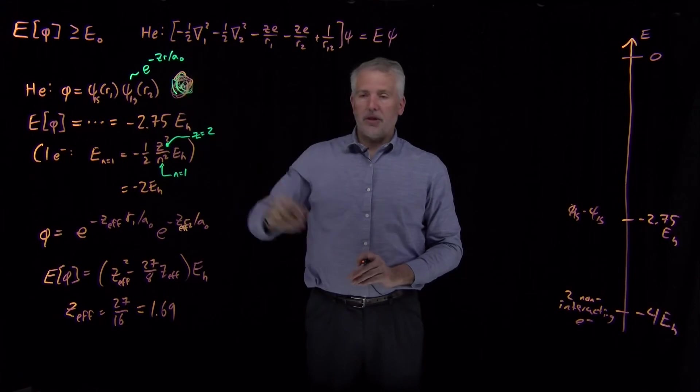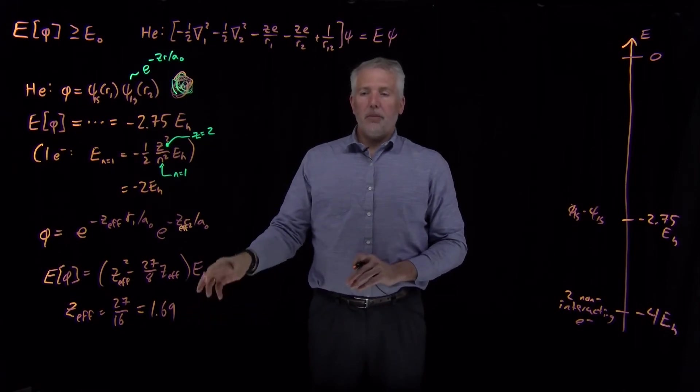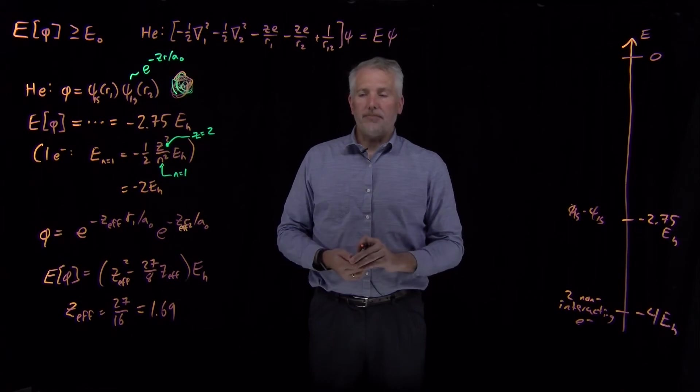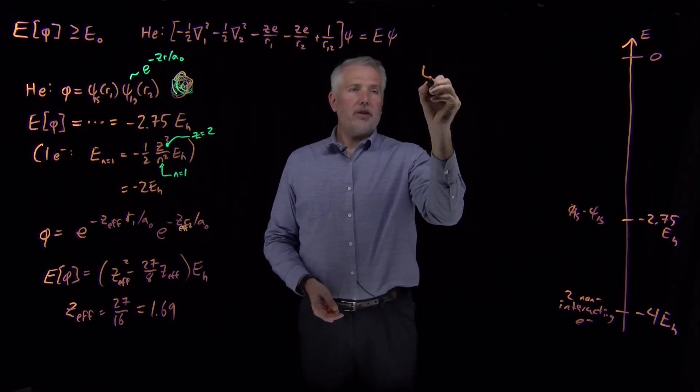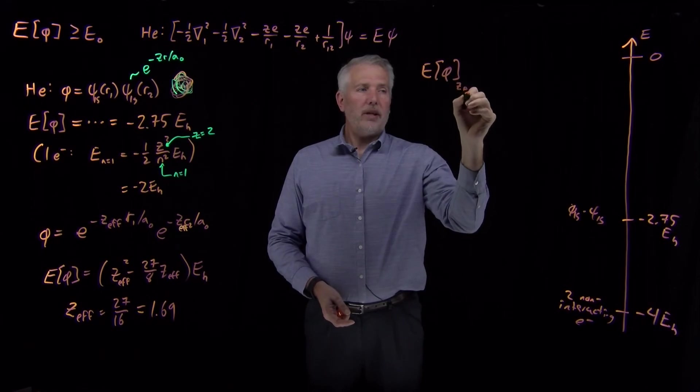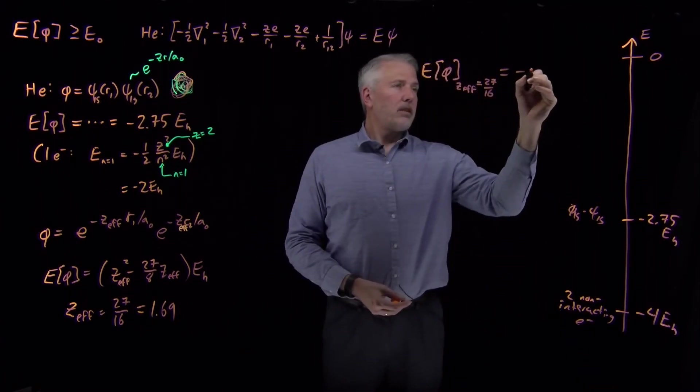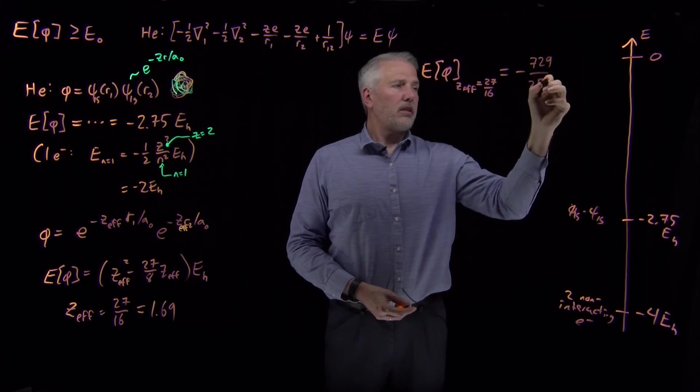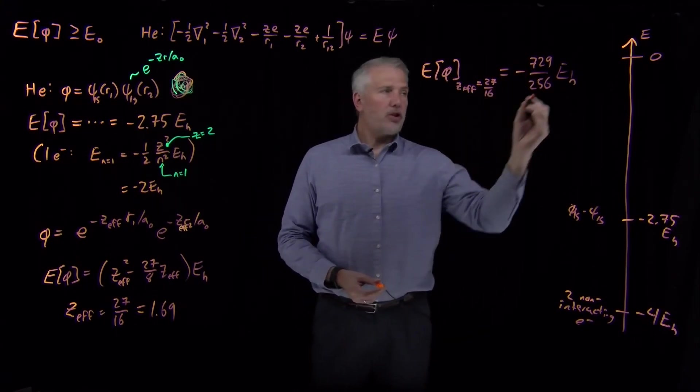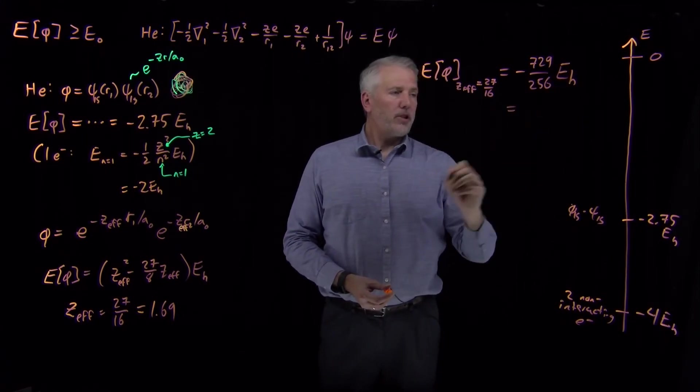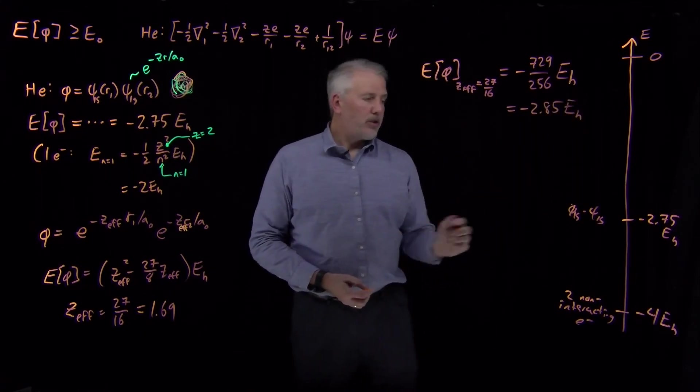And what that means is my electrons, I get a better result for the wave function if I treat the electrons as if they're attracted to a nuclear charge of size 1.7, because about 15% of the nuclear charge has been screened by the other electron. If I then take that particular value of the nuclear charge, if I calculate the energy of my trial function when the effective charge is 27 sixteenths, what I find is this particular result, negative 729 over 256 Hartrees as the energy of that trial function. If I convert that to a decimal, that works out to be about minus 2.85 Hartrees.